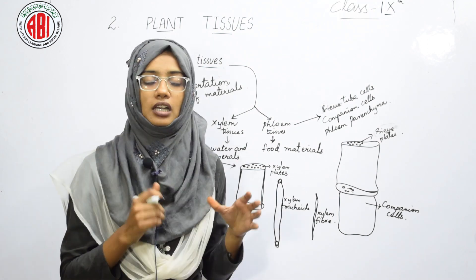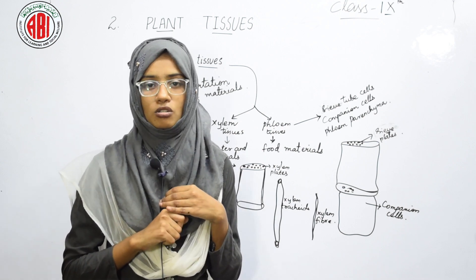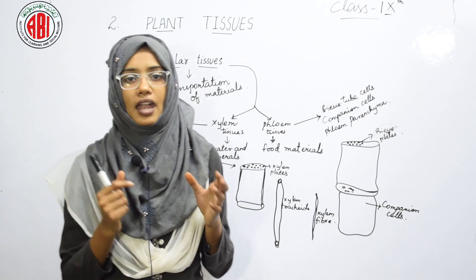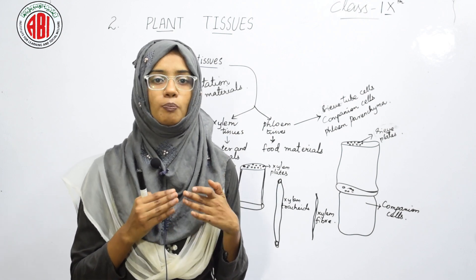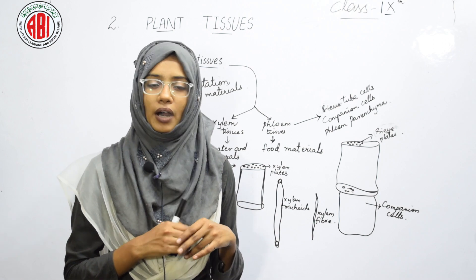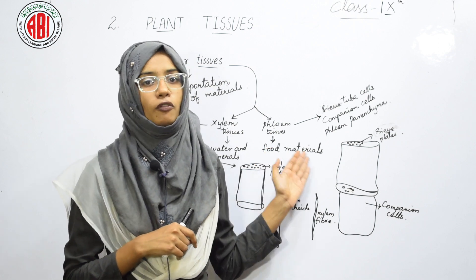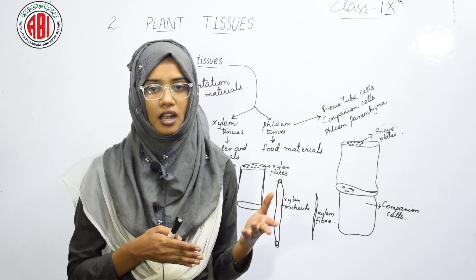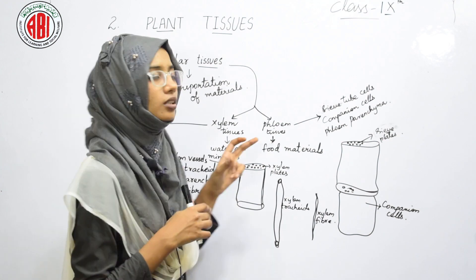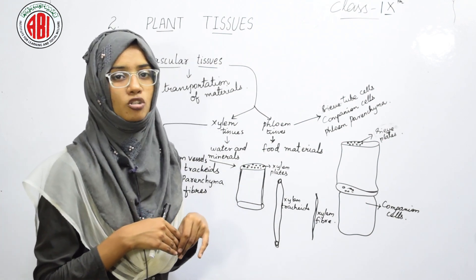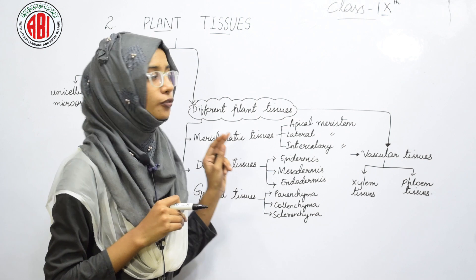Xylem tissues can carry water up to a greater height. In animals, specialized pumping organs like the heart pump blood to different parts of the body, but in plants there is no special pumping organ. Instead, specialized tissues — xylem and phloem — are responsible for carrying materials up to greater heights. This is about the vascular tissues.